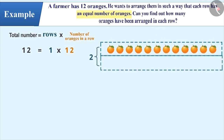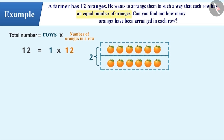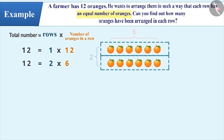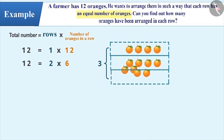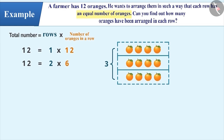We can divide 12 oranges equally in 2 rows, resulting in 6 oranges in each row. Therefore, we can express the total as 12 equals 2 multiplied by 6. Similarly, we can divide 12 oranges equally in 3 rows, meaning there will be 4 oranges in each row. Therefore, the total can be expressed as 12 equals 3 multiplied by 4.